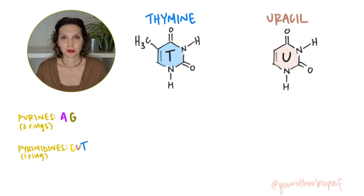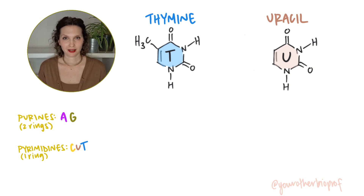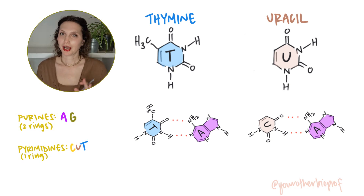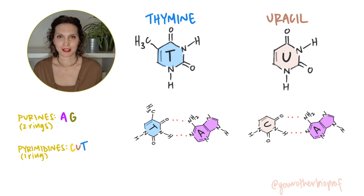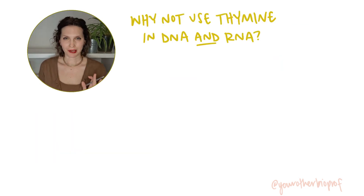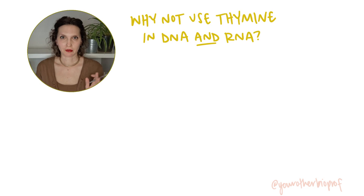Looking at the bases, they're structurally pretty similar, and they both pair with adenine. So why use one or the other? Turns out there's some pretty good reasons for that. Now there are more hypotheses beyond what I'm going to present to you here, but I'll drop more info in the comments if you want to learn a little bit more. Let's start by looking at why we don't use thymine for both DNA and RNA, while uracil is preferred for RNA.